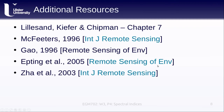For additional resources, you can read chapter 7 of Lillesand, Kiefer and Chipman. I've also included links to the four papers discussed: McFeeters for the NDWI for liquid water, Gao for the water content in vegetation version, Epting et al. for estimating burn severity from satellite images, and Zha et al. for the Normalized Difference Built-Up Index. That's all for this lesson — if you have any questions, please post them to the discussion forum on Blackboard. Thanks, bye.